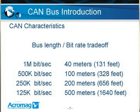The maximum length of the CAN bus is dependent on the bit rate being used. A one megabit per second bus can have a maximum length up to 40 meters, while a slower implementation such as 125 kilobits per second would be able to go up to 500 meters.